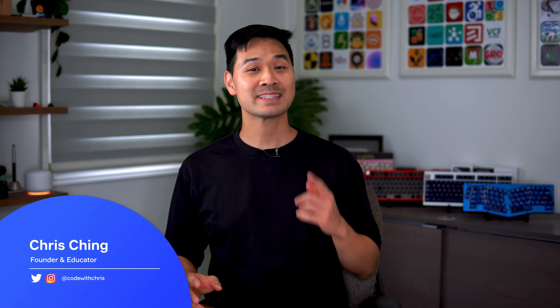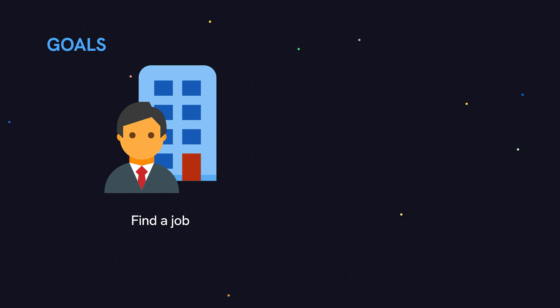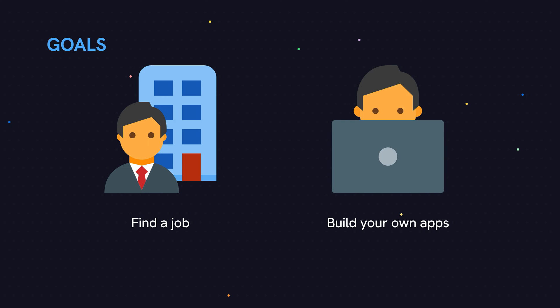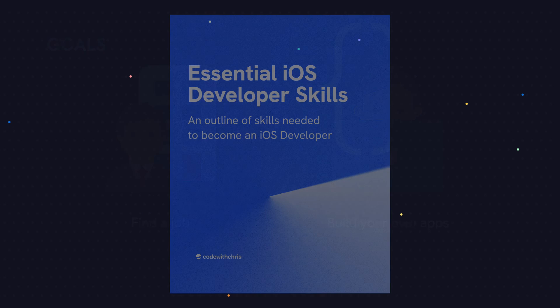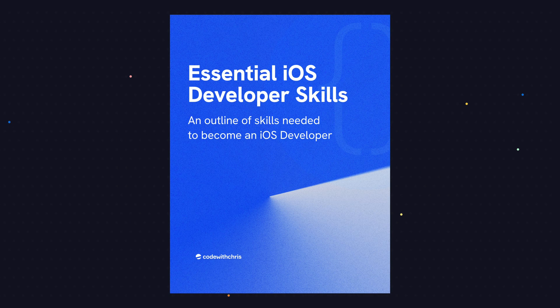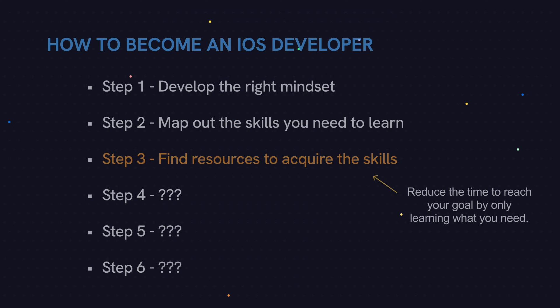In the last video, we mapped out the skills that you need for two different goals: number one, becoming an iOS developer to find a job, and number two, becoming an iOS developer to build your own apps. I even made a downloadable PDF for you with the skill trees. Now we need to talk about finding the right resources to learn these skills.